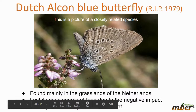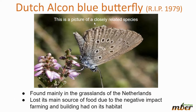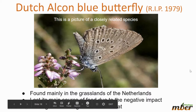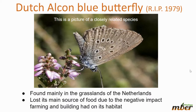The Dutch Alcon Blue Butterfly was found mainly in the grasslands of the Netherlands and lost its main source of food due to the negative impact of farming and building on its natural habitat. Basically, we leveled its home and built our own.